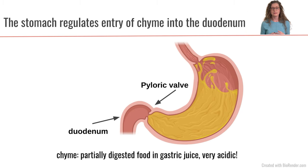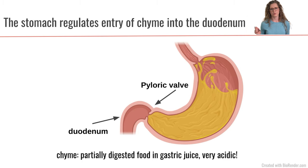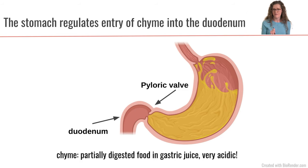It's really important that the pyloric valve regulates the entry of chyme into the duodenum and the rest of the small intestine because we don't want to overload it with all the food at once. There is lots of important digestion and absorption that takes place in the small intestine, so it can't be overwhelmed, otherwise that process won't happen efficiently. Also keep in mind that this chyme, as it leaves the stomach and enters the duodenum, is going to be very very acidic because of the gastric juice.